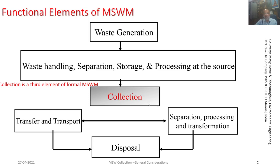Now, from this particular point onwards, we can think of different alternatives. After this particular collection, waste may lead to a transfer and transport facility. If there is no transfer and transport facility, and if no other treatment option is available, it may directly lead to disposal. Or otherwise, it may also lead to separation, processing, and transformation facility meant for that particular municipal solid waste. Hence, this particular collection element serves as a junction.